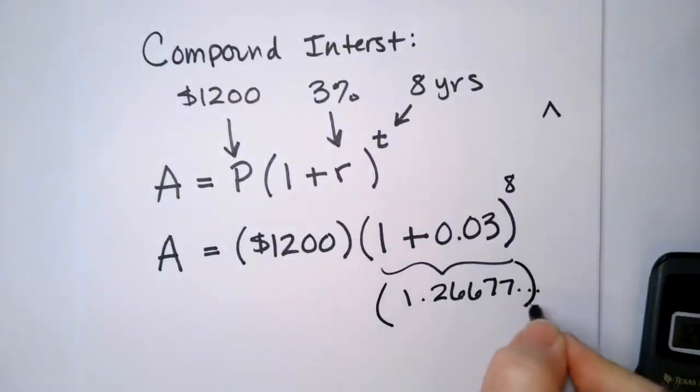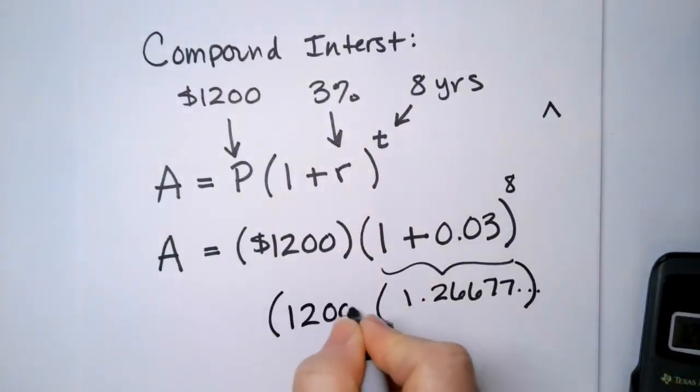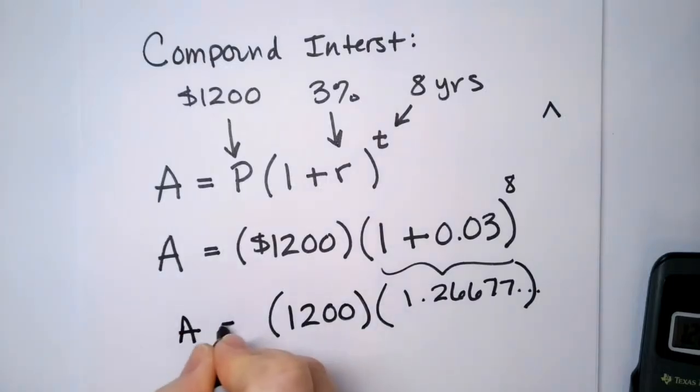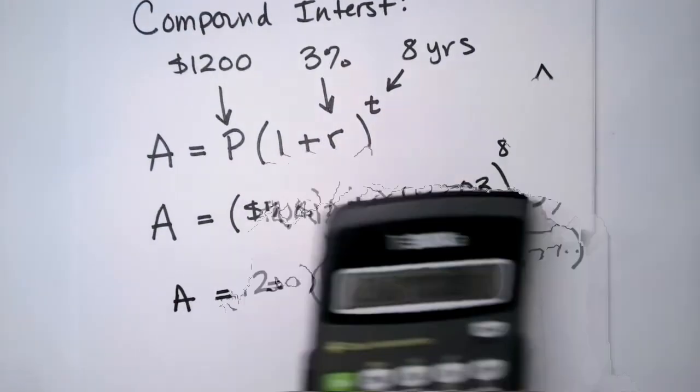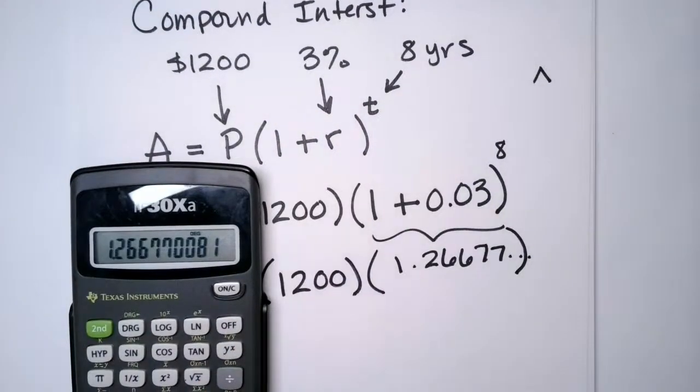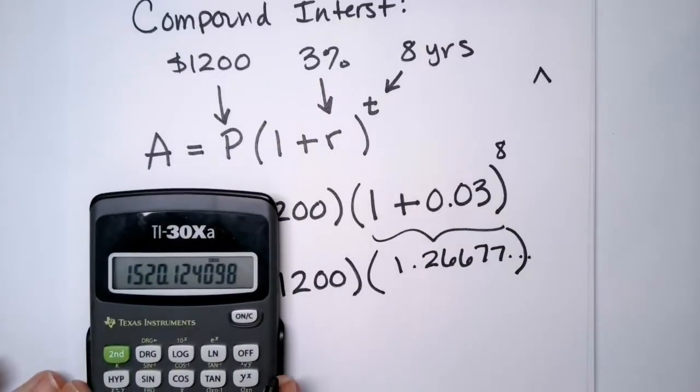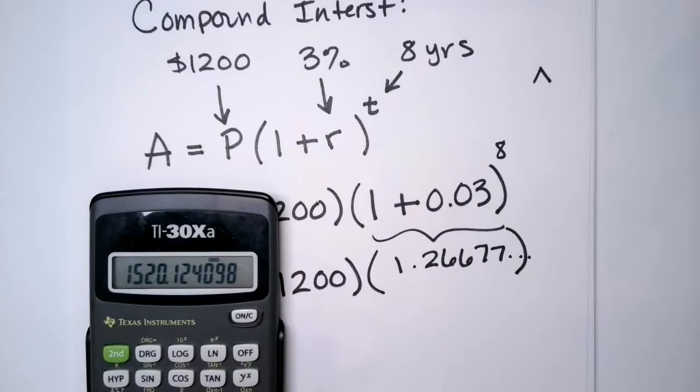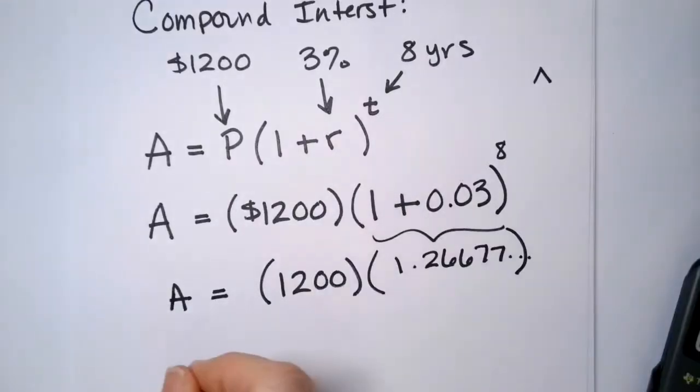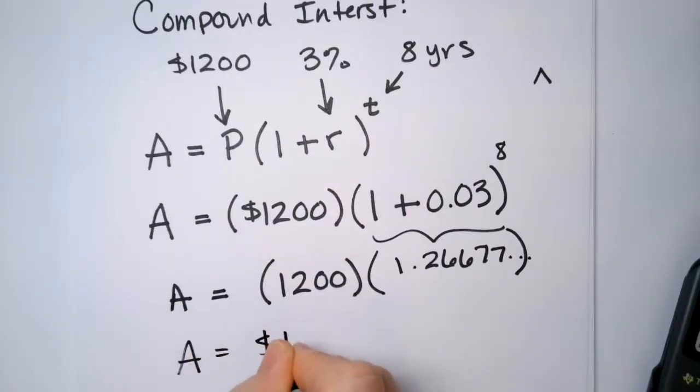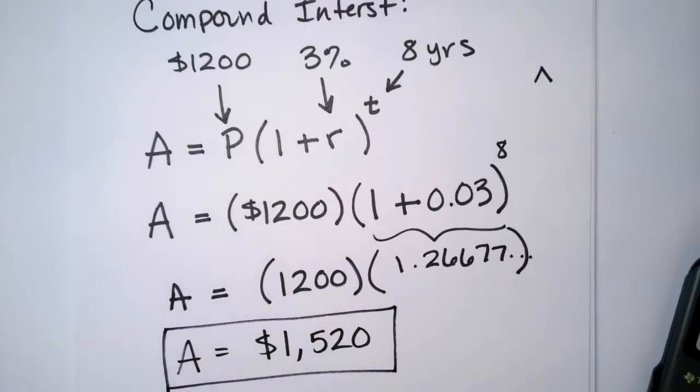So I'm going to multiply this number by 1,200. So just take your calculator, leave the number in there, and just say times 1,200. So what do you read? I have $1,520. We'll just leave off the cents for now. $1,520.